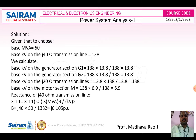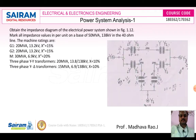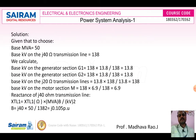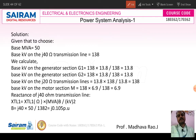For generator 1, the base kV on the high-voltage side is 138 kV. We have a 13.8 kV by 138 kV star-to-star transformer, so the base voltage on the low-voltage side is 138 × (13.8/138) = 13.8 kV. The base voltage of generator 2 is the same value.